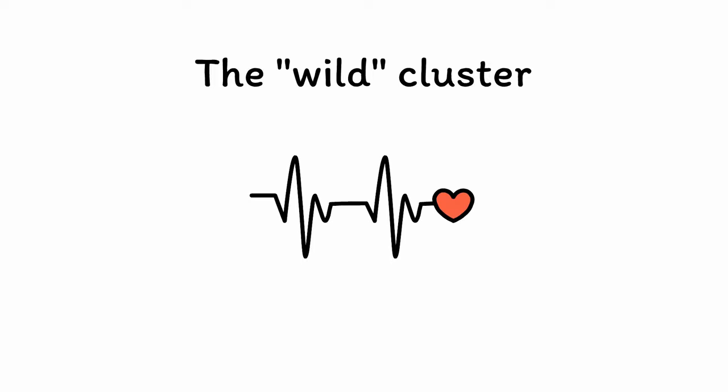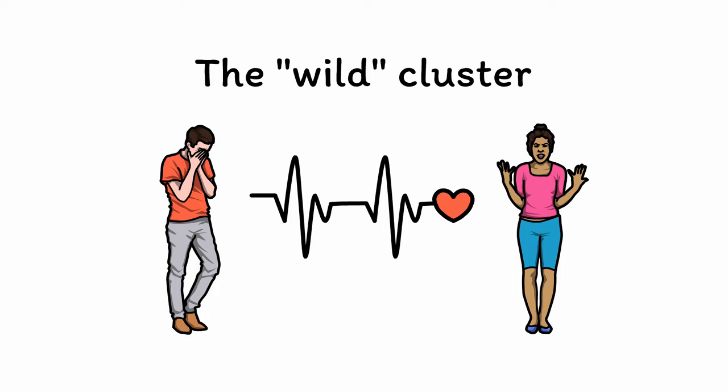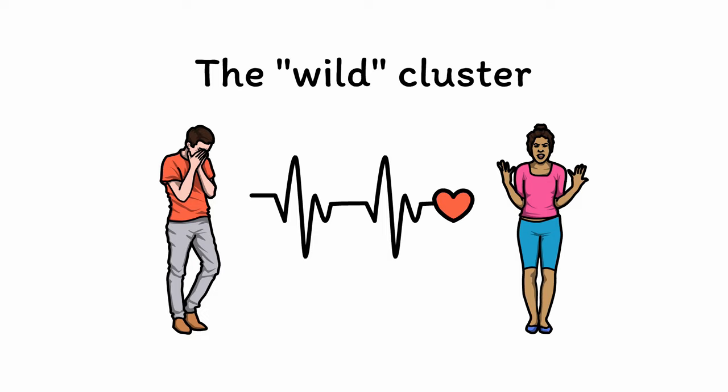This cluster is sometimes known as the wild cluster due to the emotional instability associated with each disorder. One of the core factors linking all Cluster B patients is their sense that their emotions are unbalanced, with feelings of sadness, dissatisfaction, anger, irritability, and emptiness being common. The involvement of extreme emotional states makes these disorders commonly misdiagnosed as mood disorders like depression and bipolar disorder. However, Cluster B personality disorders are not defined by any single mood state, but by a tendency towards negative emotions of all kinds — mapping to the OCEAN trait of high neuroticism, found in all four disorders.